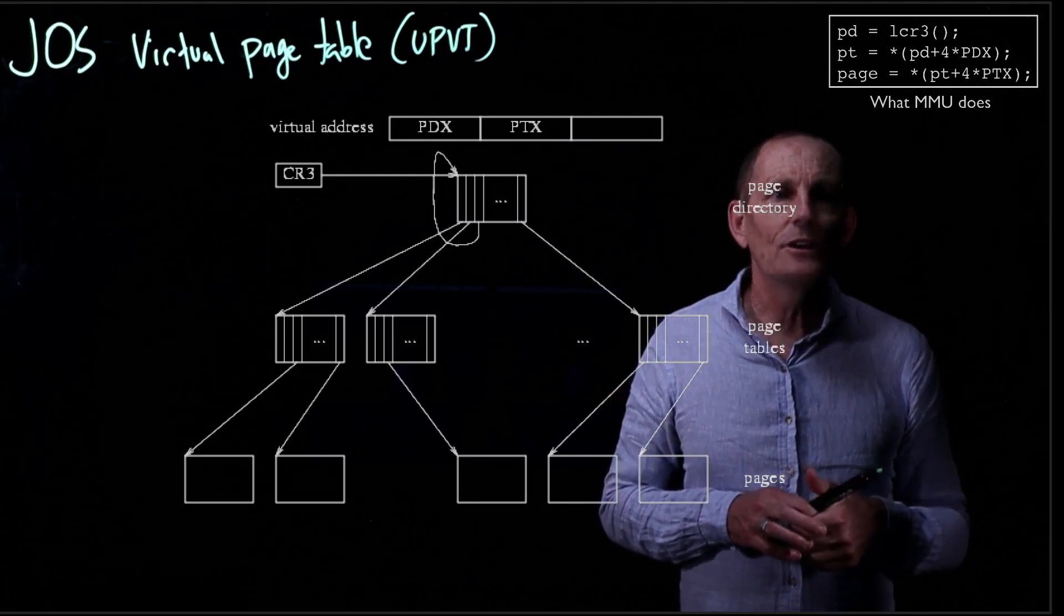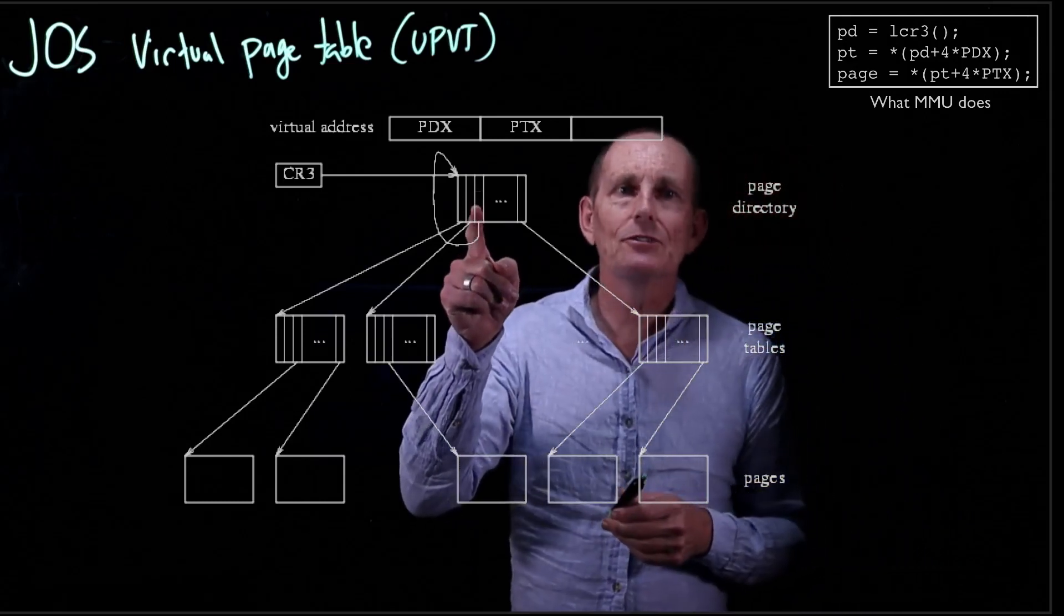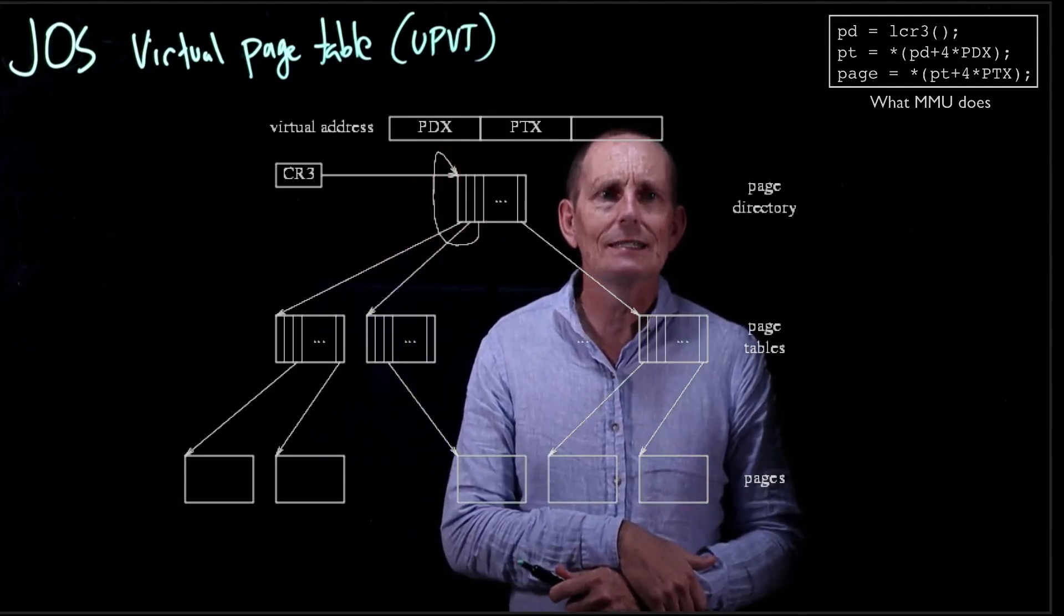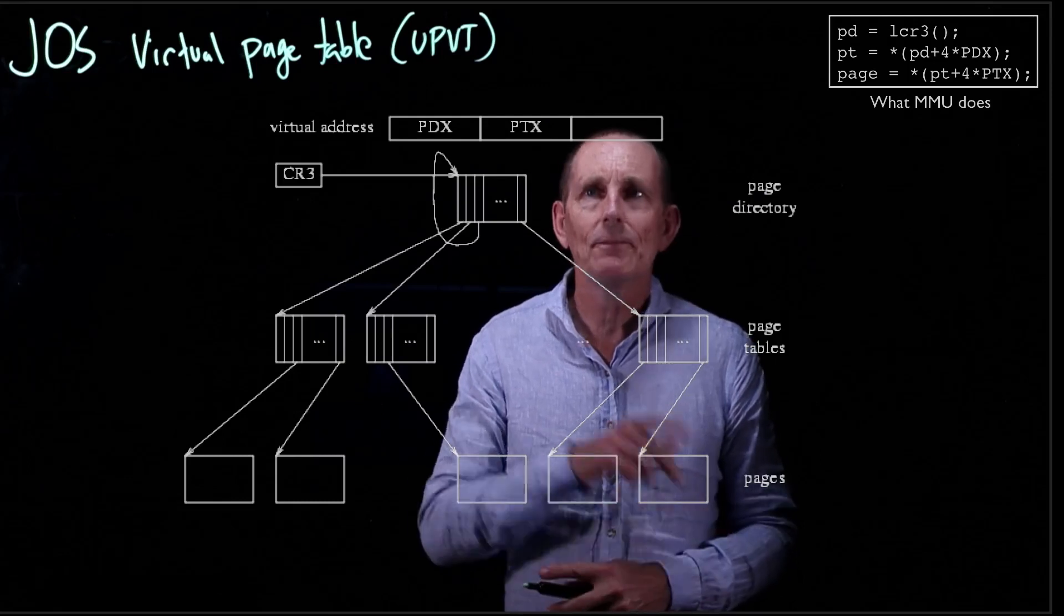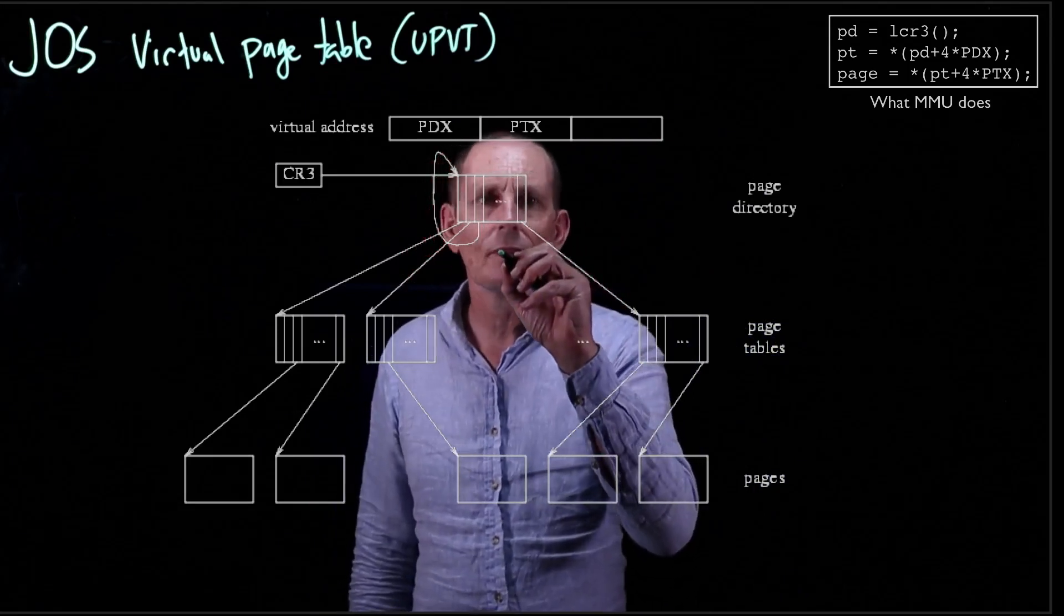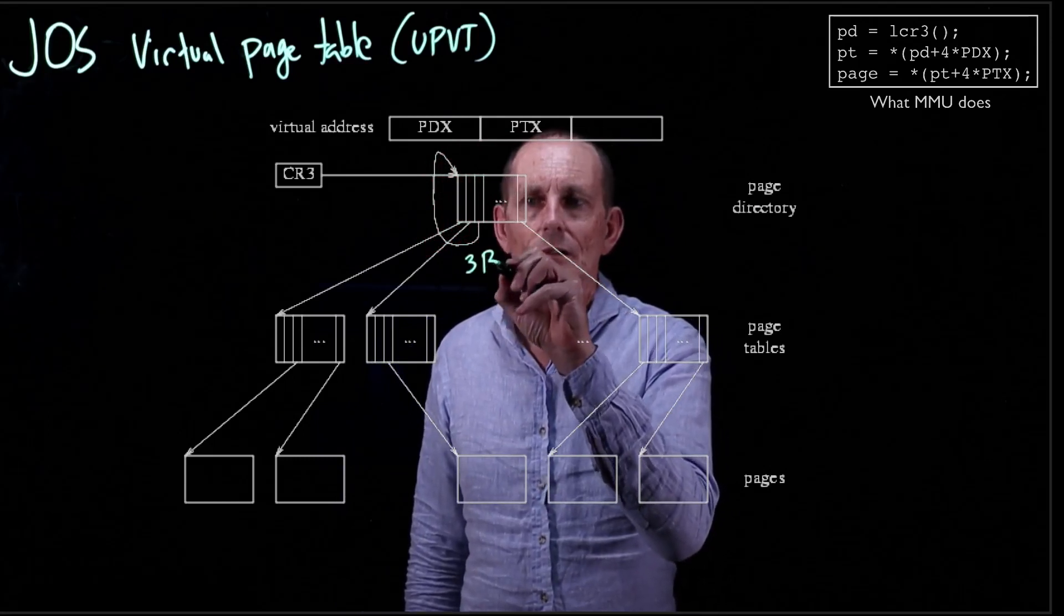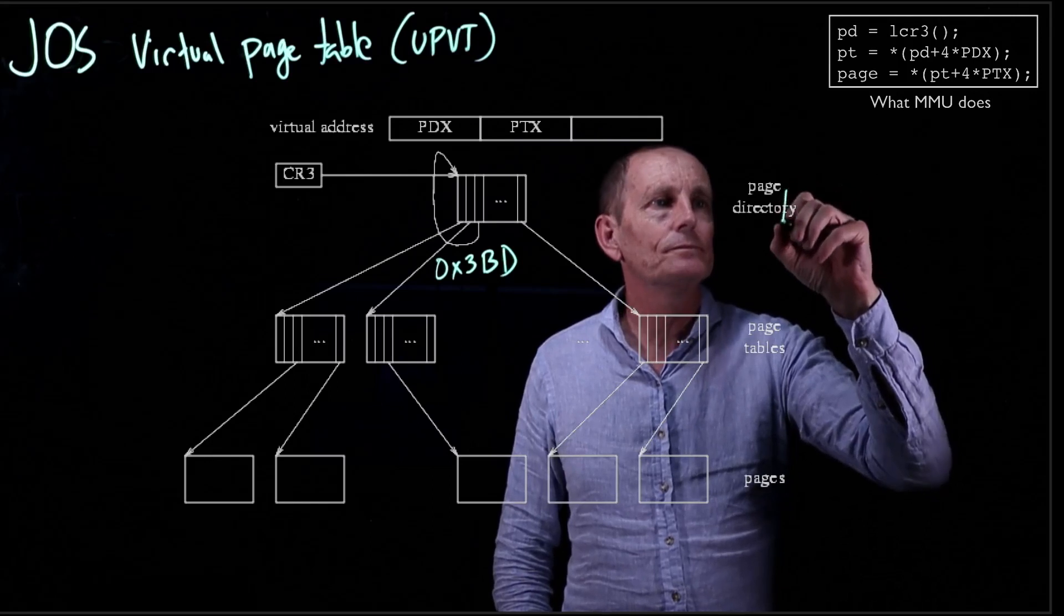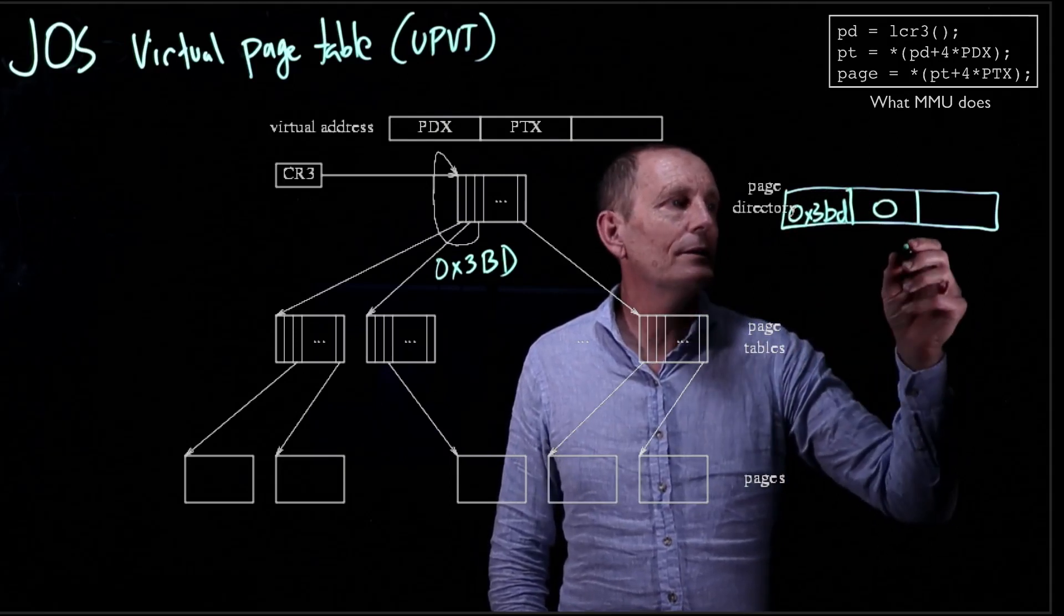Well, what we're going to take advantage of is we are going to set in our page directory one particular entry. And that particular entry is going to point back to the page directory itself. So let's kind of look and see what that means. Let's say that this index in here is 0x3BD, okay?